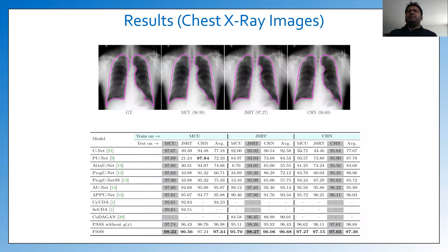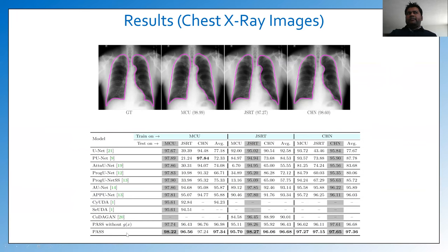Similarly, consistent segmentation performance is observed in both qualitative and quantitative evaluations in the lung segmentation task for both in-domain and cross-domain prediction. As you can see on the top, the predicted segmentation for a test image from the MCU dataset — this is the ground truth, this is the prediction when the model is trained and tested on the MCU dataset, and this is the prediction when the model is trained on the CSN dataset and tested on the MCU dataset. The superior performance of our PASS model over PASS without the transformation function demonstrates and justifies the inclusion of the transformation function as well as the semi-supervised learning nature of our model.